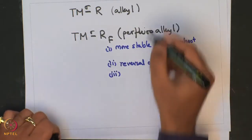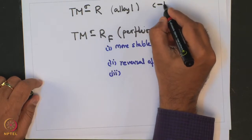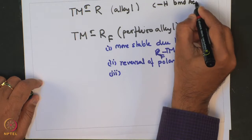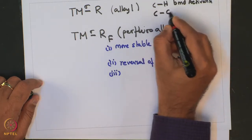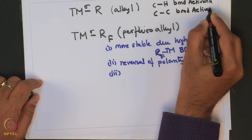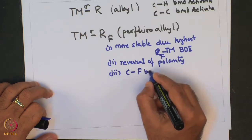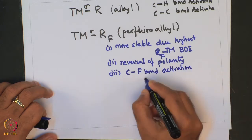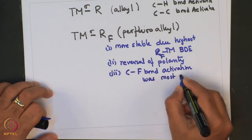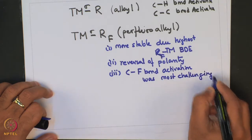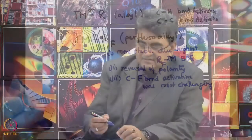in the case of Transition Metal Perfluoroalkyl complexes, C-F bond activation was the most challenging. We had also seen in our previous lecture some examples pertaining to C-F bond activation, not only in a stoichiometric fashion but also in catalytic fashion using a rhodium catalyst.